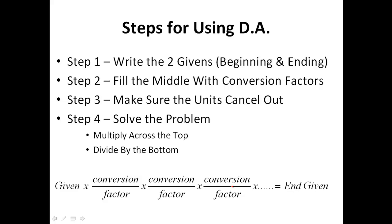In order to use dimensional analysis, there are four steps that are pretty essential. Step number one is to write the two givens out. I call them the beginning given and the ending given. The beginning given starts the problem, and the ending given — sometimes called the 'want' — is the unit I want to get to. The whole problem is converting from the given to the ending given.